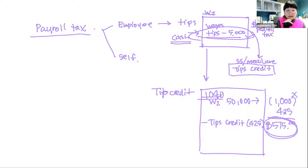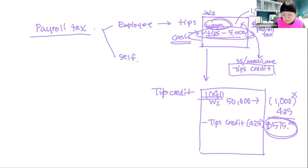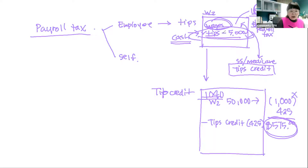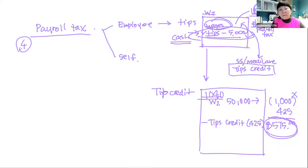If tips aren't run through payroll, you don't have the expense recorded and you can't claim the credit on your 1040. This is free money that people miss because they merge tips with wages, treating it as one combined amount. That's free money number four — for small business and restaurant owners. We've now covered: sales tax calculation, sales tax on taxable services, property tax, and tips credit.